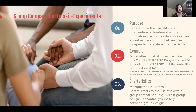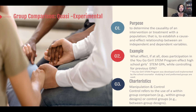Two distinguishing characteristics of a quasi-experimental design include manipulation, just like with a pre-experimental design, and control. Manipulation is when a scholar manipulates the independent variable or implements an intervention to observe the effect on the dependent variable. Control refers to the use of a comparison group.